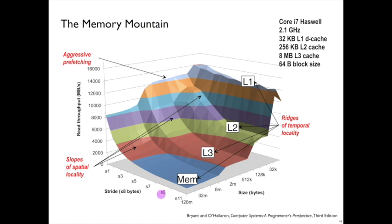This axis along the left edge is the stride. So a stride of one means simply a sequential access, where a stride of 11 is jumping around enough that it starts to look like random access.